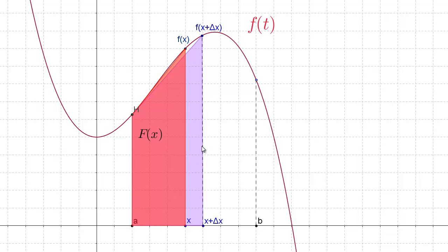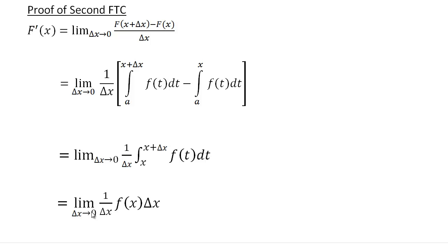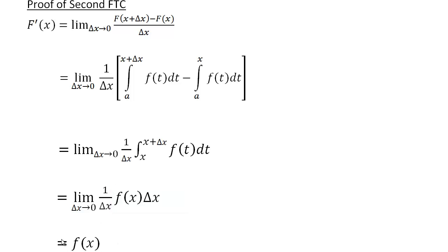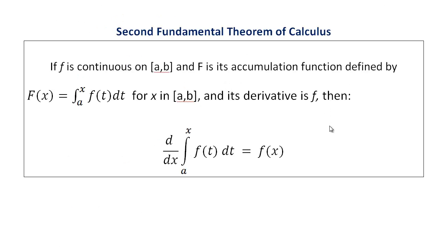The integral from x to x plus delta x is this small area, which as delta x gets smaller and smaller becomes very close to a rectangle where f of x is the height and delta x is the width. Therefore, this becomes the limit as delta x approaches 0 of 1 over delta x times f of x times delta x. The delta x's cancel out, leaving us only with f of x — simplicity defined. This confirms the second fundamental theorem of calculus: the derivative of the definite integral from a to x of f of t dt equals f of x.